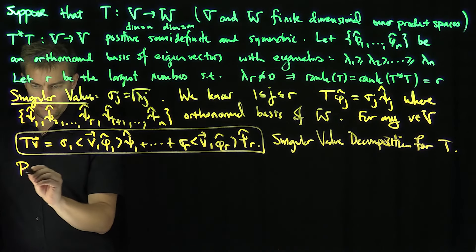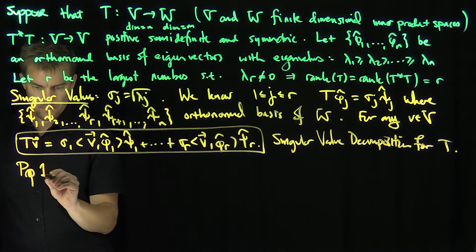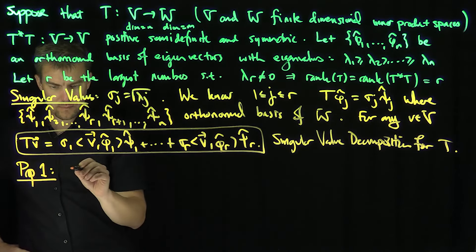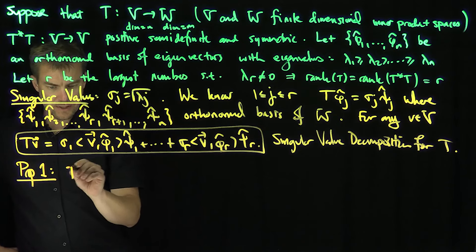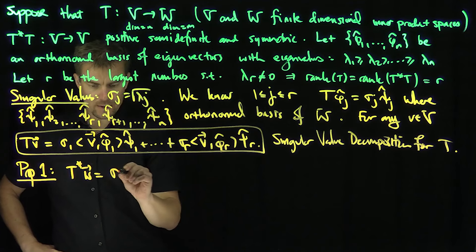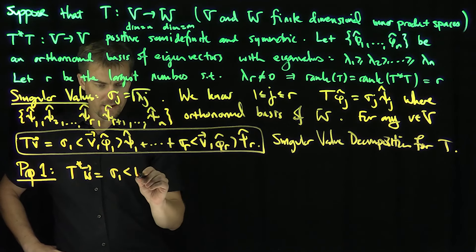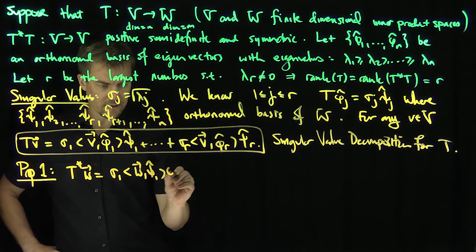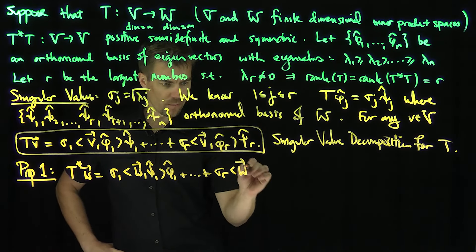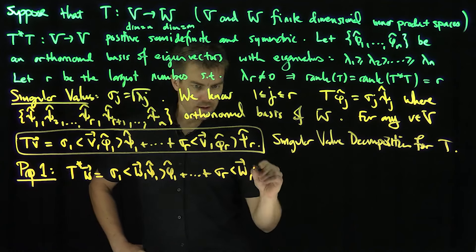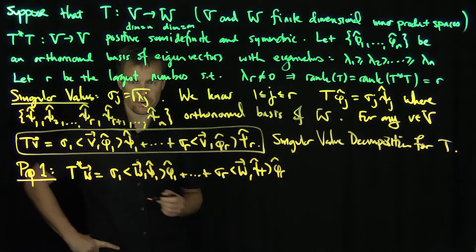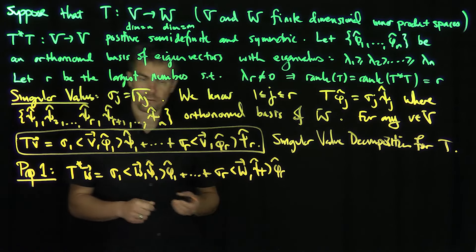Now the question is: what is the singular value decomposition for the adjoint? Proposition one states that T*(w) equals sigma-1 times the inner product of w with psi-1-hat times phi-1-hat, all the way down to sigma-r times the inner product of w with psi-r-hat times phi-r-hat. In other words, we just interchange the roles of phi and psi in the decomposition.